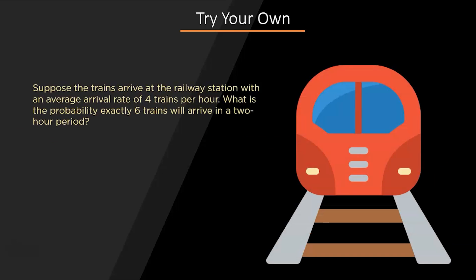Now we have one question for you — do try to answer in the comment section. Suppose trains arrive at a railway station with an average arrival rate of 4 trains per hour. What is the probability that exactly 6 trains will arrive in a 2-hour period? Here are your options — please let us know your answers in the comment section.